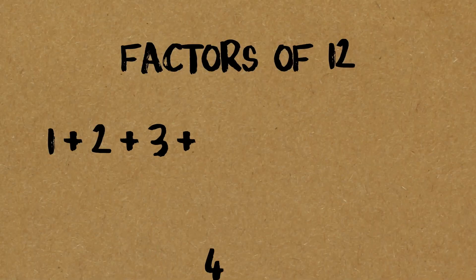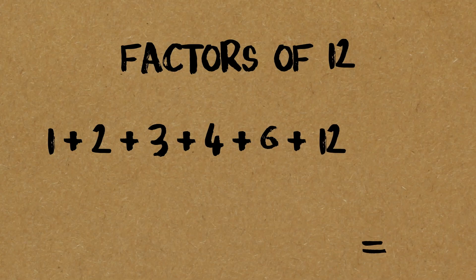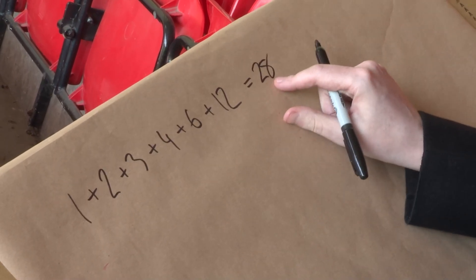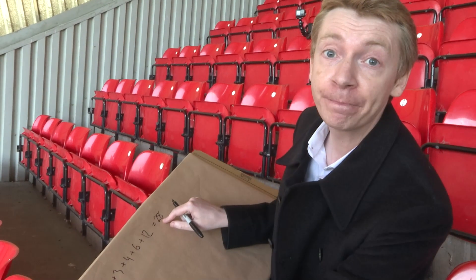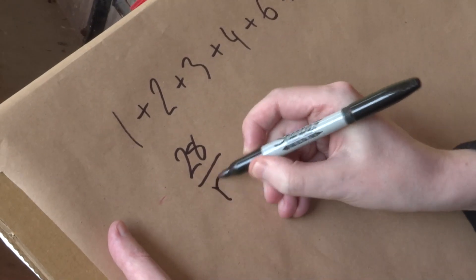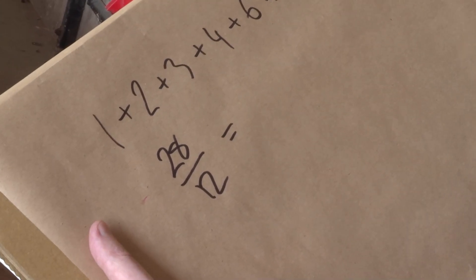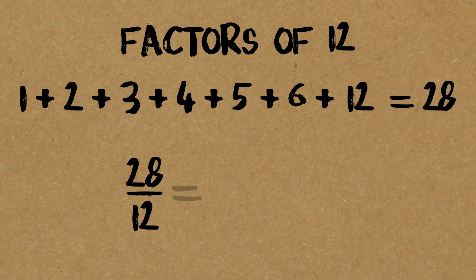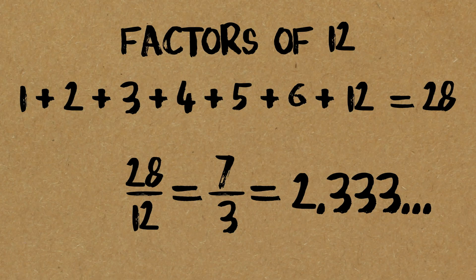Let's do the number 12. The factors are 1, 2, 3, 4, 6, and 12 itself. If I add these together, I get 28. What I'm interested in is how big is that sum compared with the original number, which was 12. One thing I could do is divide that sum by the original number. So 28 divided by 12 — I can cancel that down — gives 7 over 3, which is 2.333 going on forever. The sum of the factors is over twice the original number.